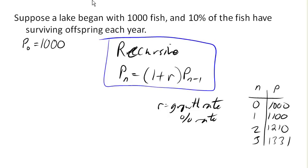And so let's go back to our specific scenario. So we said that P1 was going to be 1.10 times P0, based on our recursive equation. So likewise, P2 would be 1.10 times P1.